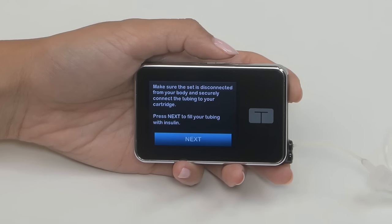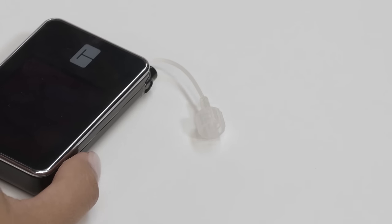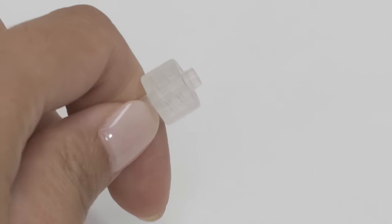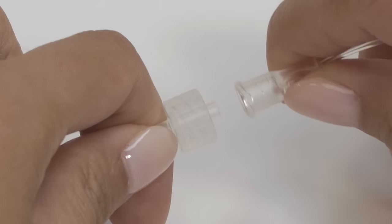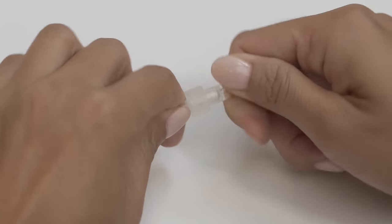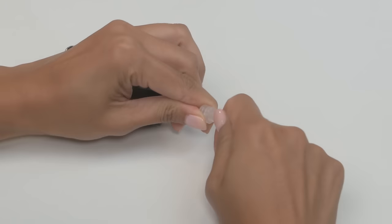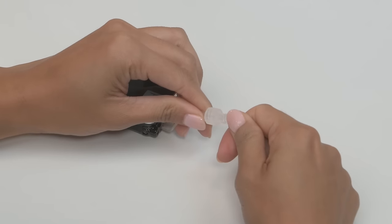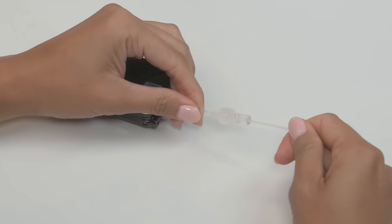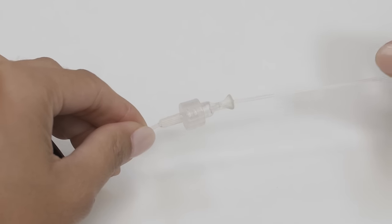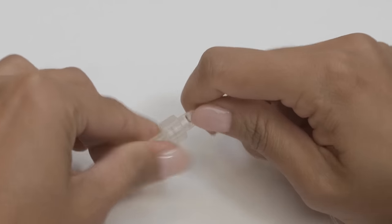Before you can fill your tubing, you need to connect your tubing to the cartridge. Your infusion set may look different, but the tubing fill process is the same. Insert this end into the tubing lock connector on your cartridge and twist clockwise. Make sure it's nice and tight. A loose connection can lead to delivery problems, so it's always a good idea to double check and when in doubt, give it an extra twist.